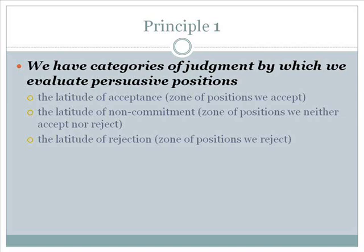Principle 1 is that we have categories of judgment by which we evaluate persuasive positions. According to social judgment theory, we can categorize each position into one of three zones. One is the latitude of acceptance, or zone of positions which we will accept. The second is the latitude of non-commitment, or a zone of positions we neither accept nor reject. And the third being the latitude of rejection, or the zone of positions we will almost automatically reject.